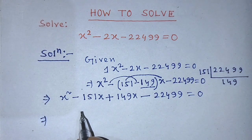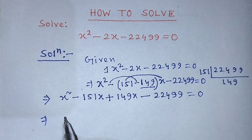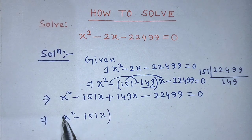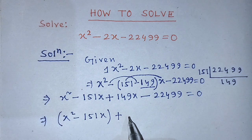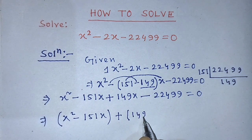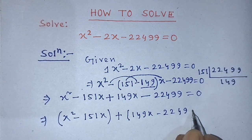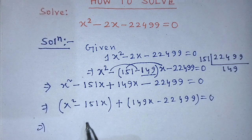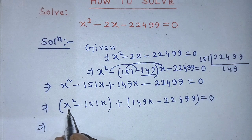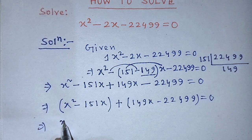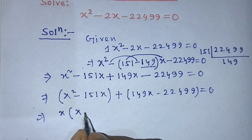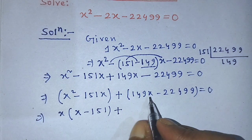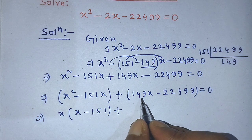Now we separate the four terms into two groups. The first group is x squared minus 151x, and the second group is 149x minus 22,499. We take x as the common factor from the first two terms, giving x times (x minus 151). Then from the second group, we take 149 as the common factor.